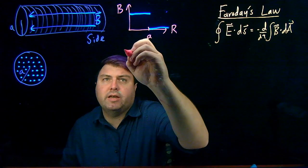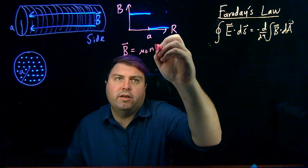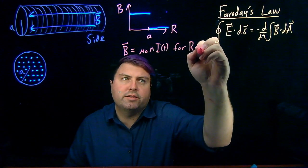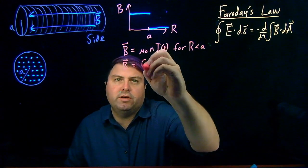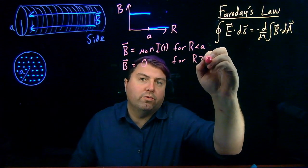So, we can also write this result as that our magnetic field B is mu-naught-Ni as a function of time for R less than A, and that our magnetic field B is zero for R greater than A.